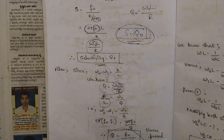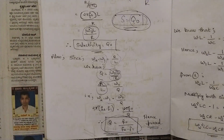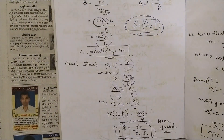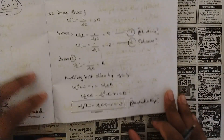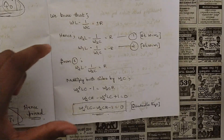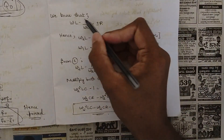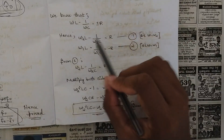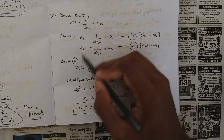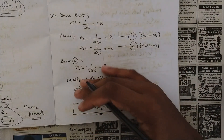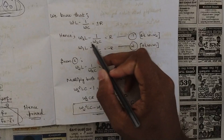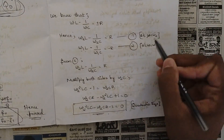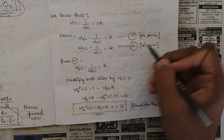So we have proved one important condition: selectivity equals Q0 for all resonating circuits. Keep all these formulas in mind because problems will be based on them. Now, according to the resonance condition, ω·L minus 1/(ω·C) equals ±R. Splitting into two half power frequencies: ω2·L minus 1/(ω2·C) equals +R, and ω1·L minus 1/(ω1·C) equals −R, at ω = ω2 and ω = ω1 respectively.